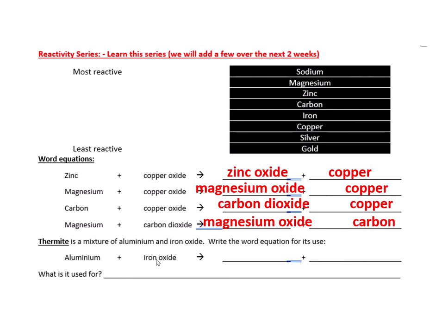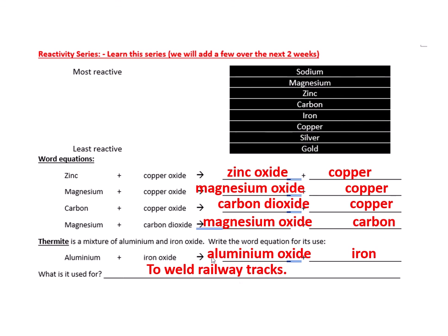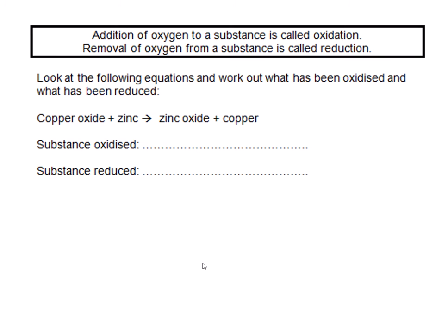A real-world use for these reactions is welding railway tracks. Aluminium and iron oxide react so that the aluminium steals the oxygen, becoming aluminium oxide, and leaves behind molten iron. That molten iron runs out between two pieces of railway track and joins them together.